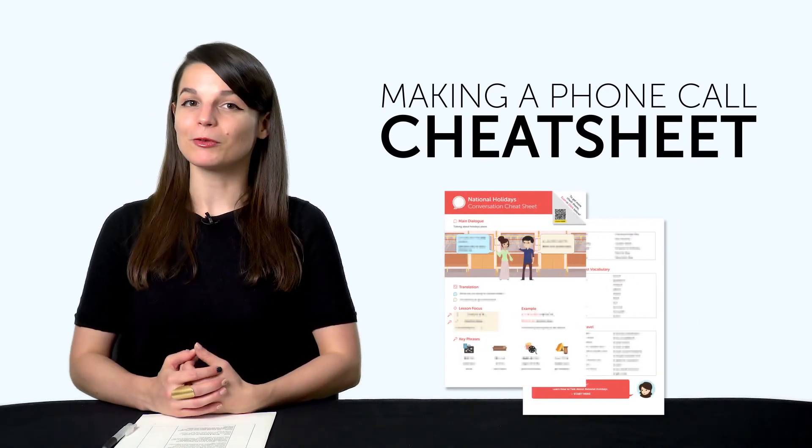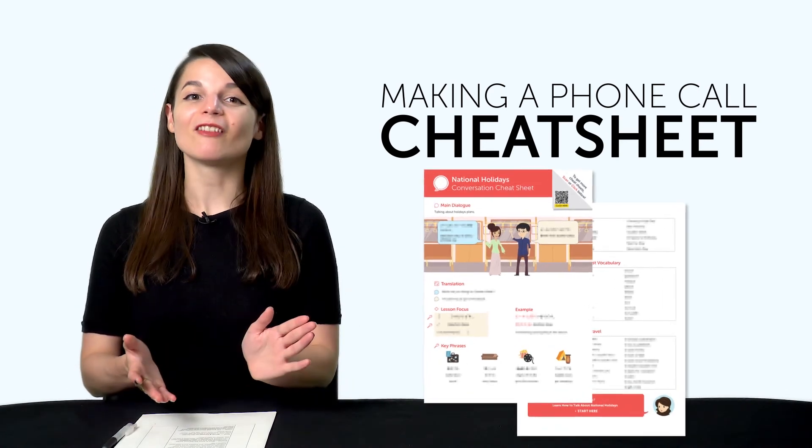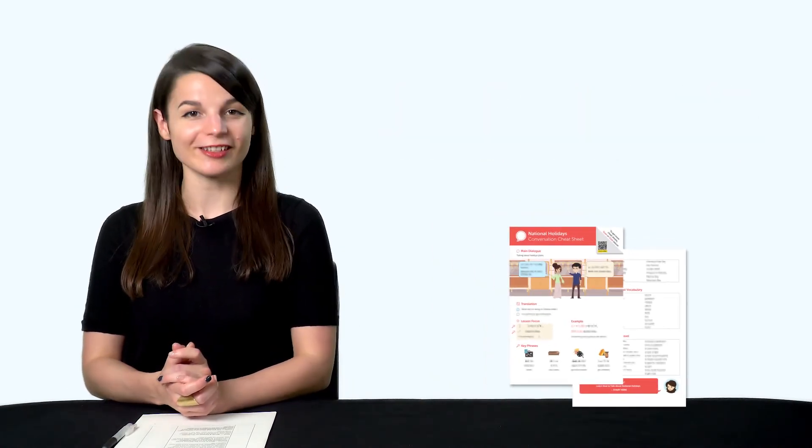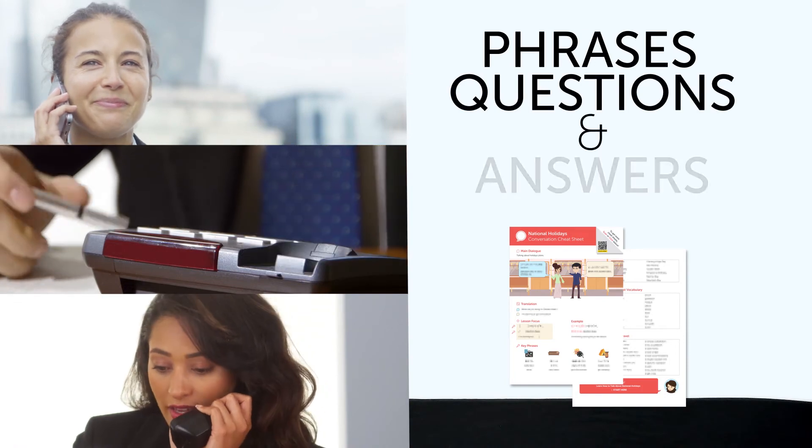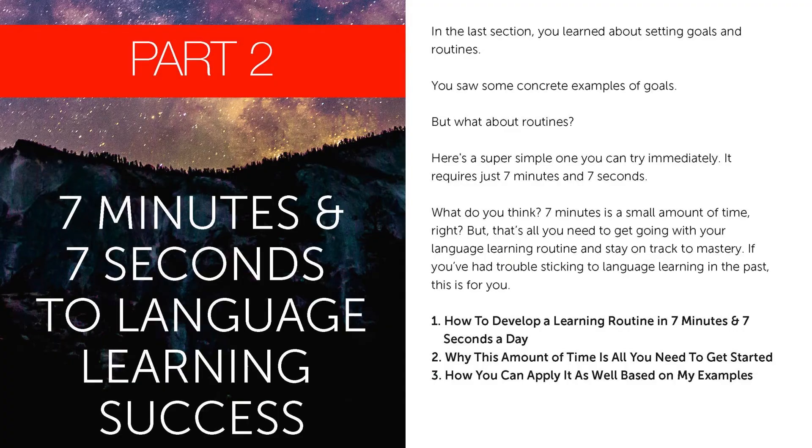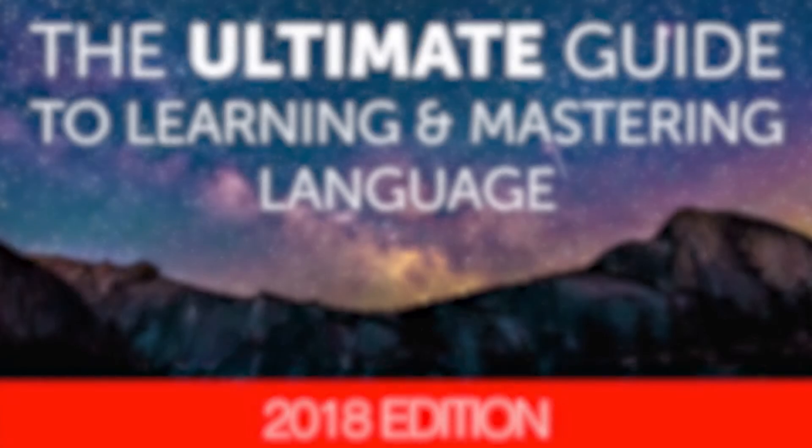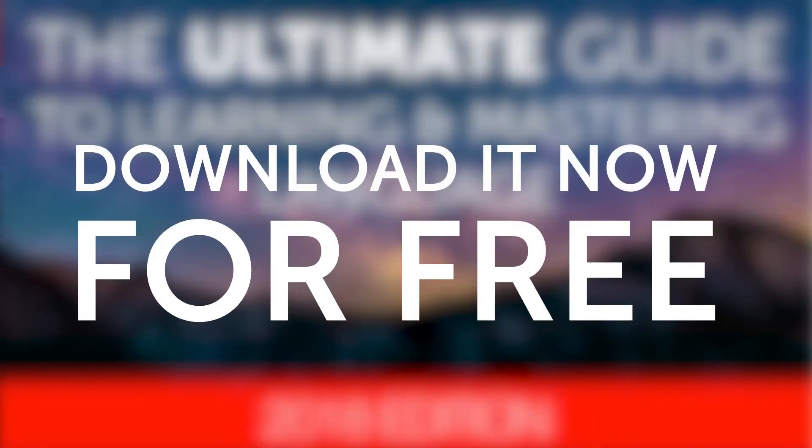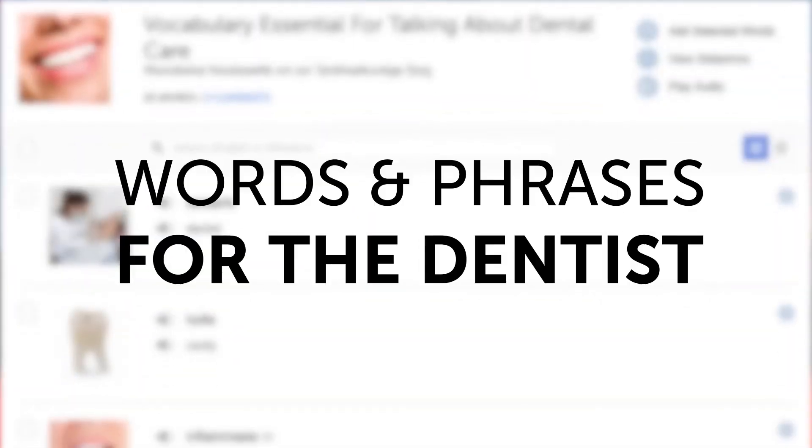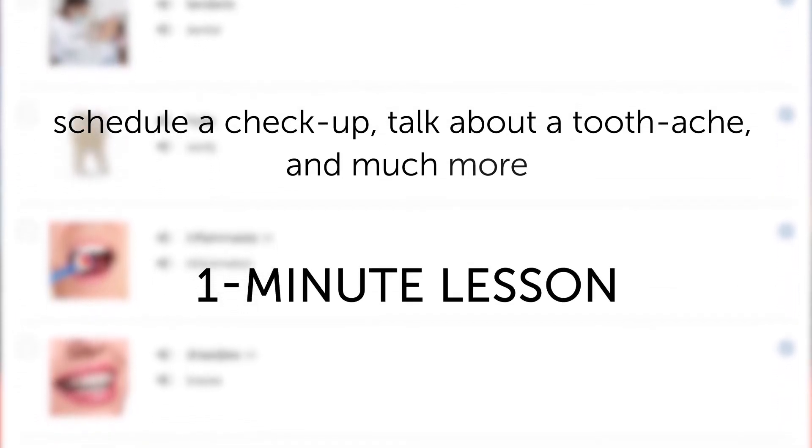First, the making a phone call cheat sheet. Want to be able to talk on the phone in your target language? Then this conversation cheat sheet will help you do just that. You'll learn all the basic phrases, questions, and answers you'll need when making a phone call. Second, want to know the learning hacks, motivational tips, and success strategies for learning a language in 2020? Then you'll want this exclusive 52-page ebook. Download it now for free before we take it down. Third, words and phrases for the dentist. Learn how to schedule a checkup, talk about a toothache, and much more with this one-minute vocab lesson. Fourth, can you talk about your zodiac sign? If not, then this next one-minute lesson is for you. You'll learn how to say the 12 signs in your target language.